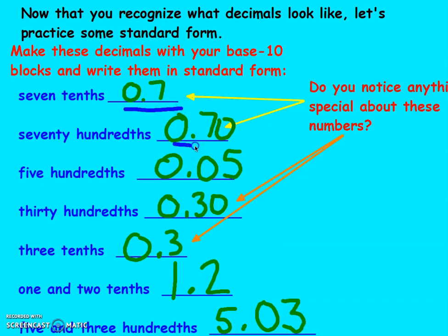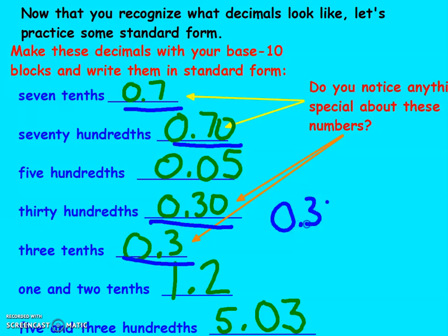Do you notice anything about these numbers? Seven tenths and seventy hundredths — if you said they are equivalent, you are correct. Three rods for three tenths and thirty hundredths is equivalent. Same with seven tenths and seventy hundredths — they are equal.